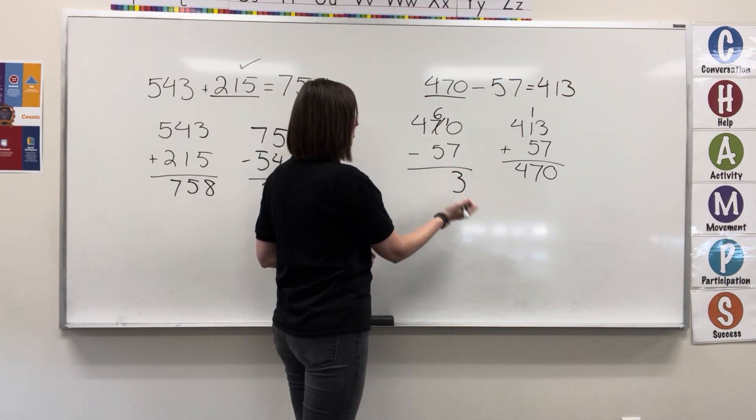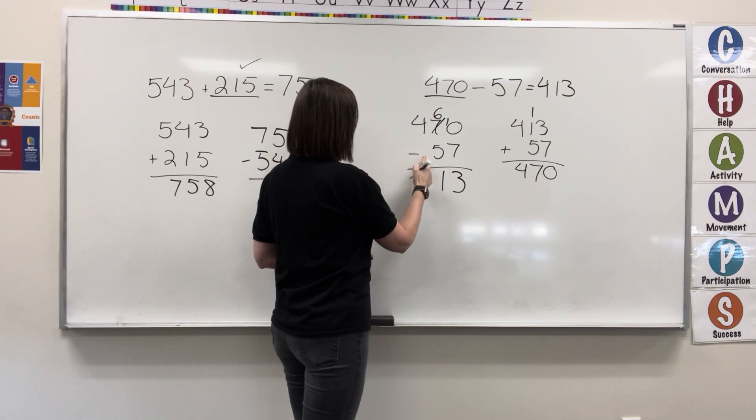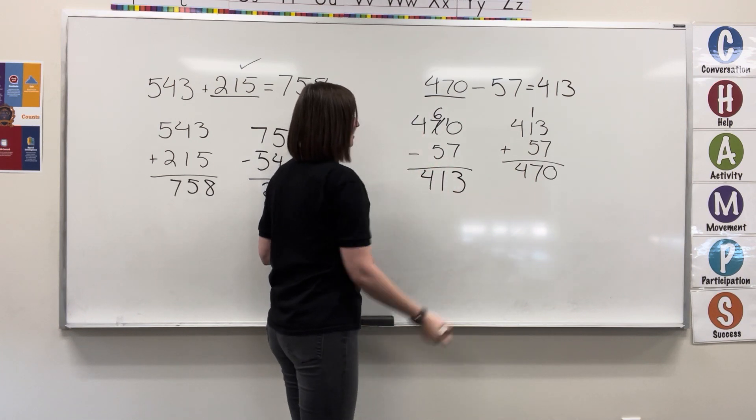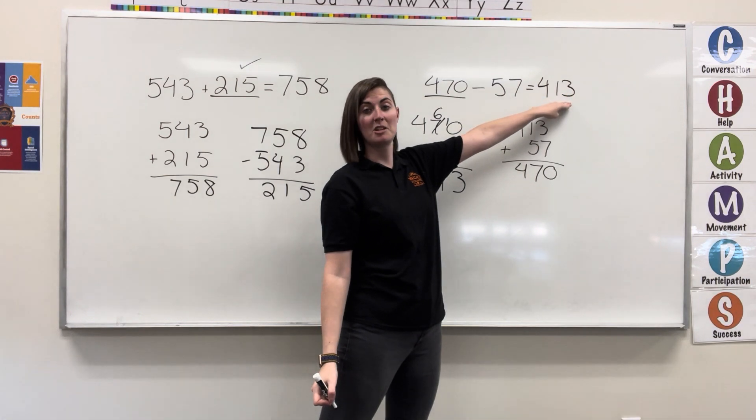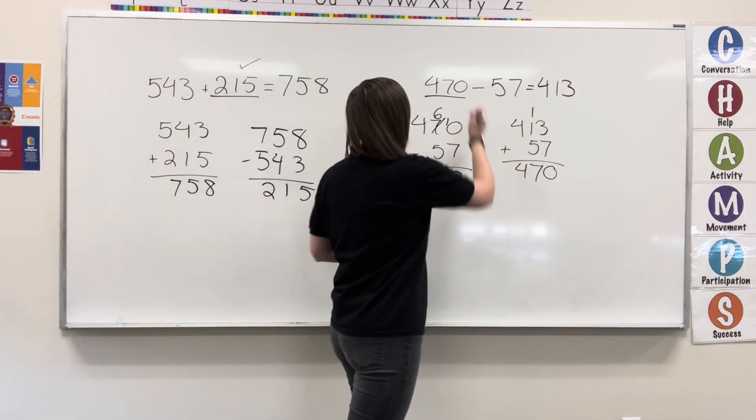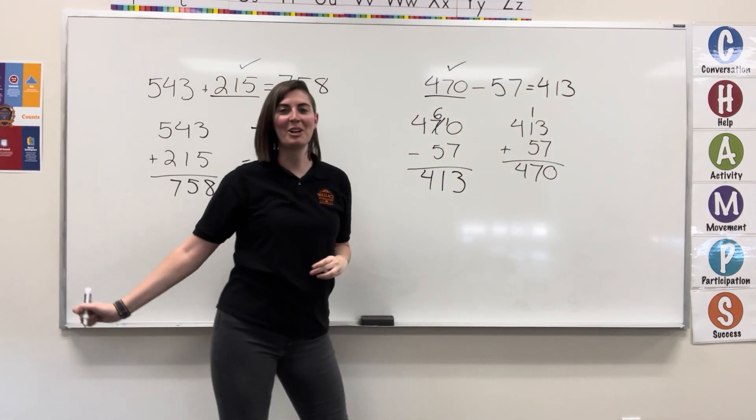6 minus 5 equals 1. Write the 1. 4 minus nothing equals 4. Write the 4. 413 matches our original difference of 413. That means 470 belongs in the blank.